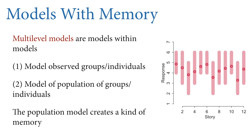What we want are models that remember and use those memories to efficiently learn about new cases as they arise. This is what multilevel models do. Multilevel models are models within models. The first kind of model is the type we've been using all along — a generalized linear model — which is a model of the observed groups or individuals in the data.